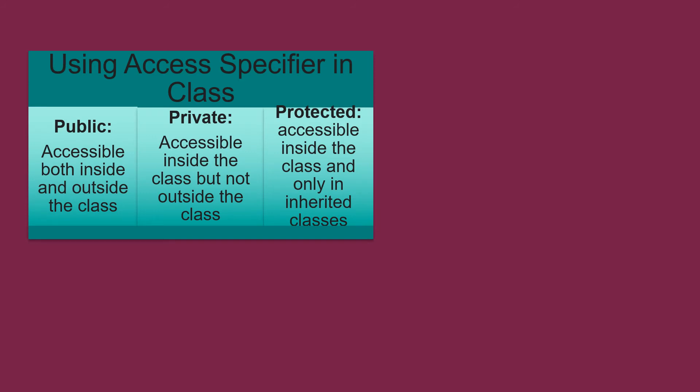It can be achieved by using access specifiers like public, private and protected. If you declare your data public, it will be accessible both inside and outside the class. If private, it will not be accessible outside, but only inside the class. And if declared protected, it will be accessible only in inherited classes.